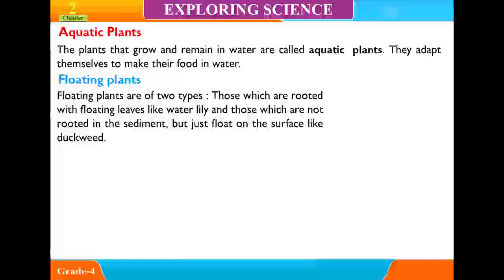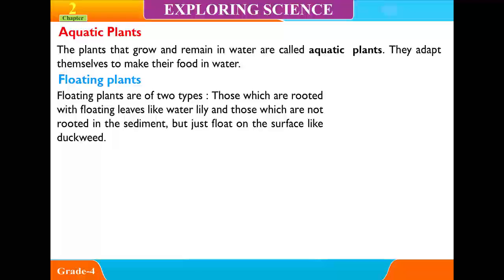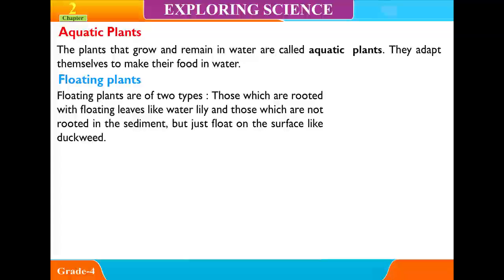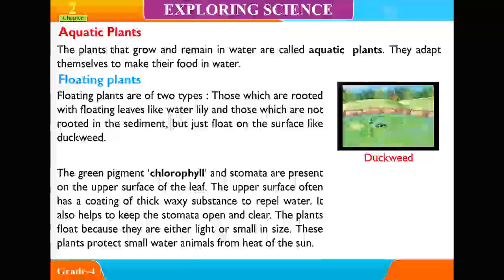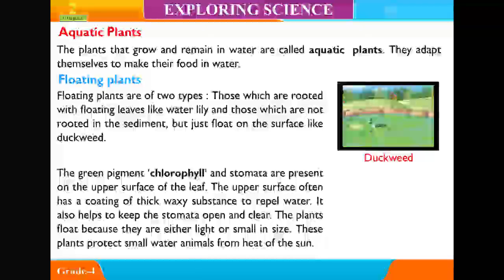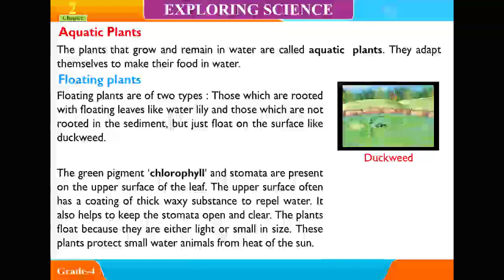Floating Plants. Floating plants are of two types: those which are rooted with floating leaves, like water lily, and those which are not rooted in the sediment but just float on the surface, like duckweed. The green pigment chlorophyll and stomata are present on the upper surface of the leaves. The upper surface often has a coating of thick waxy strands to repel water, and it also helps keep the stomata open and clear. These plants float because they are either light or small in size.